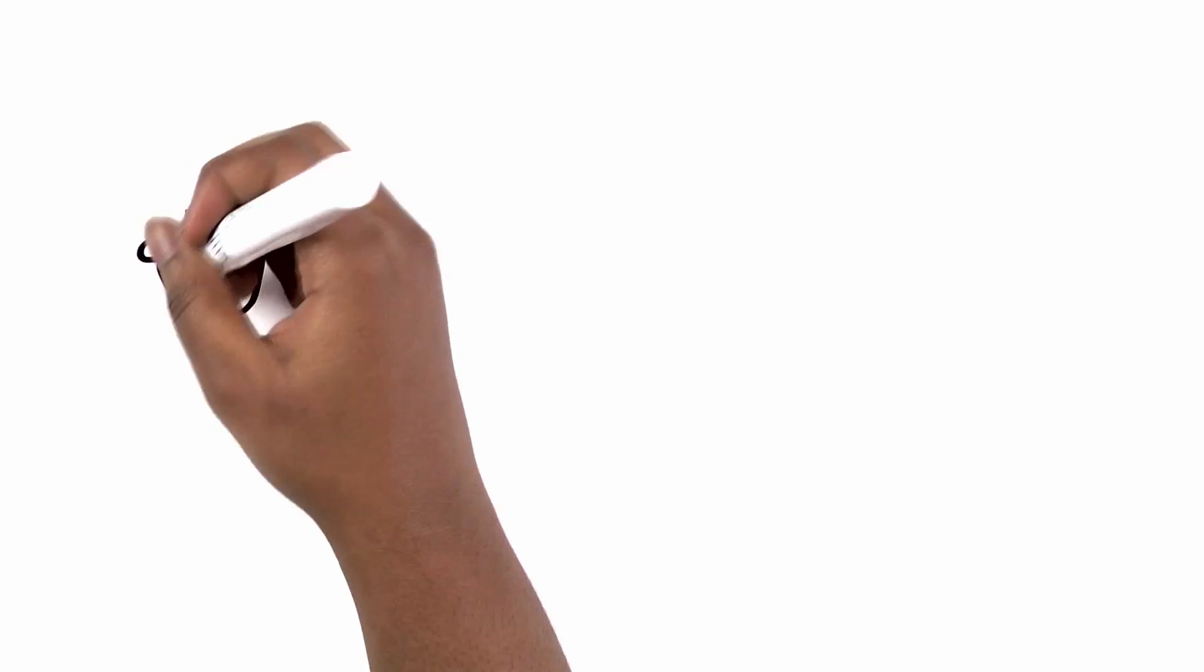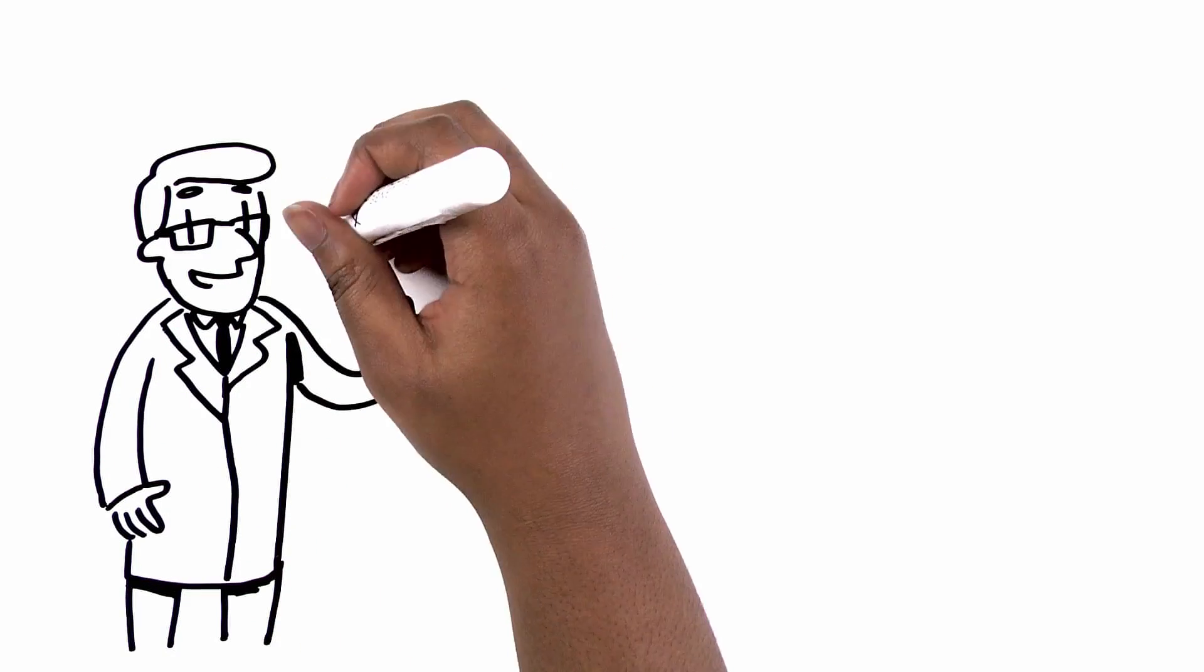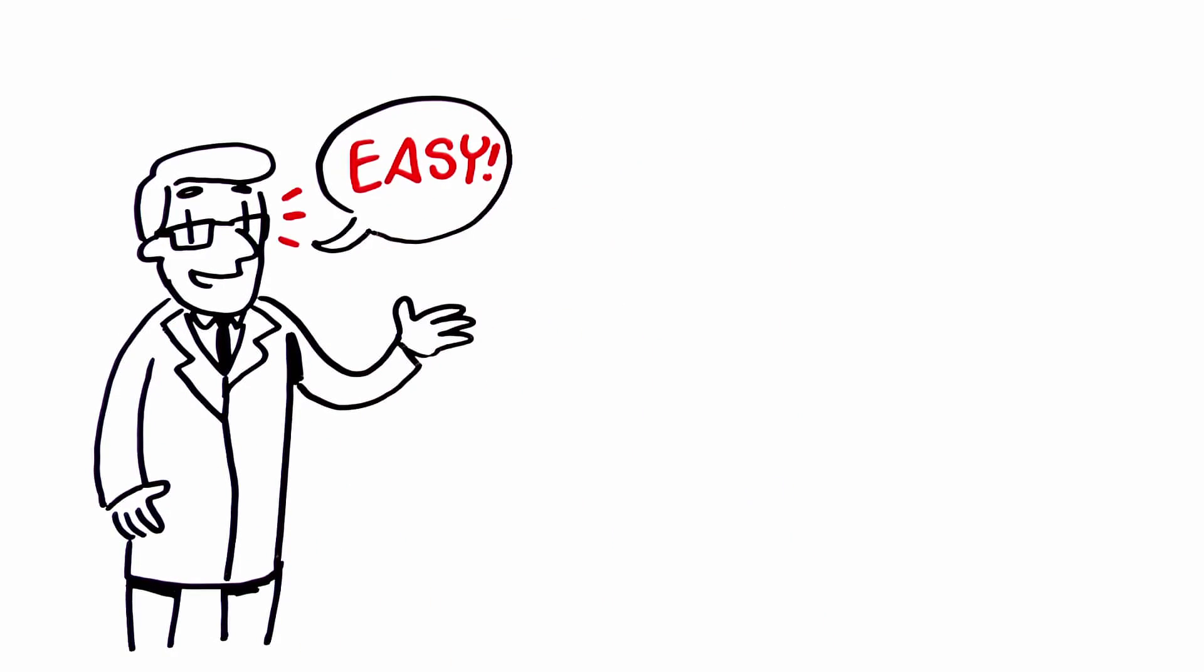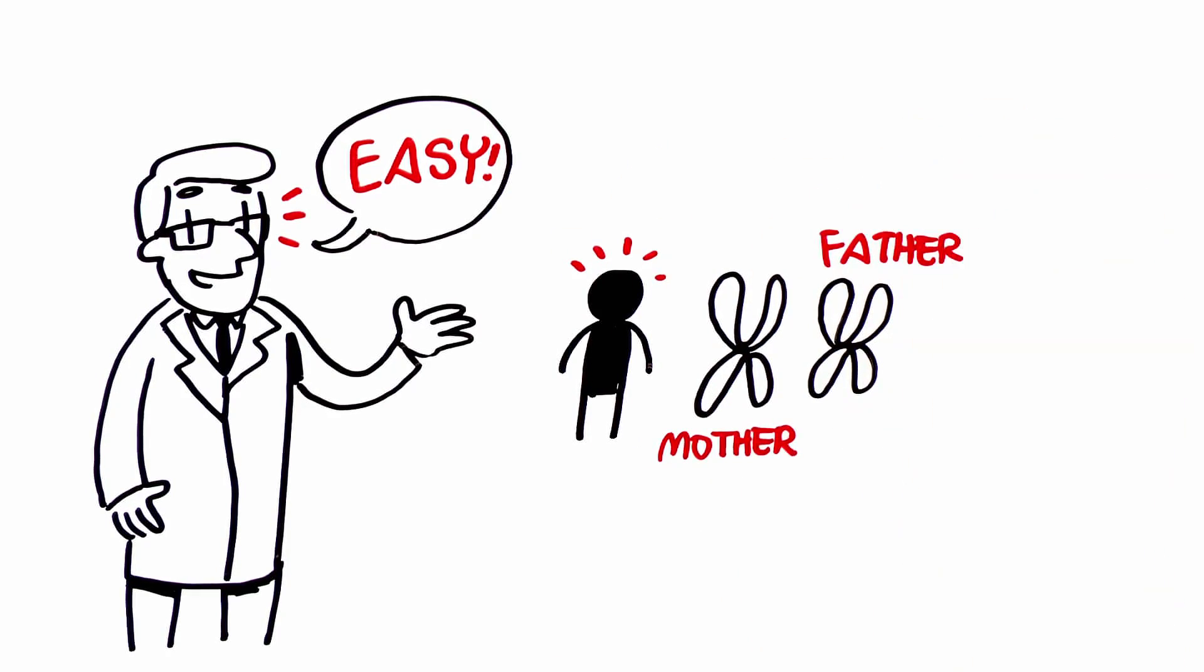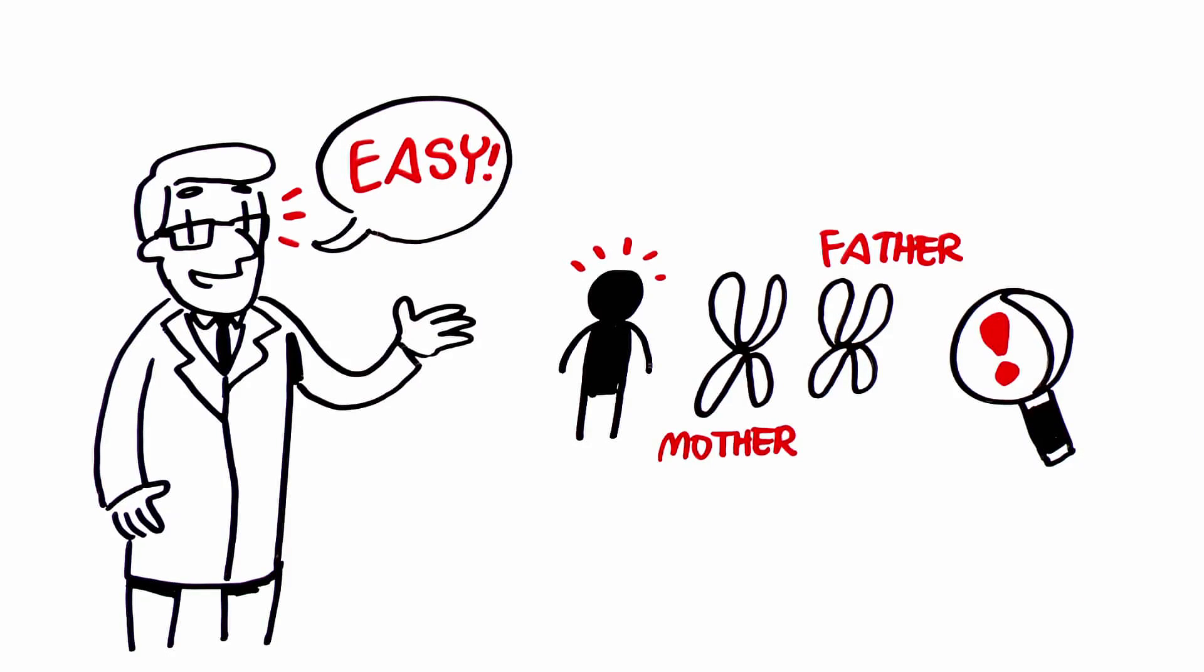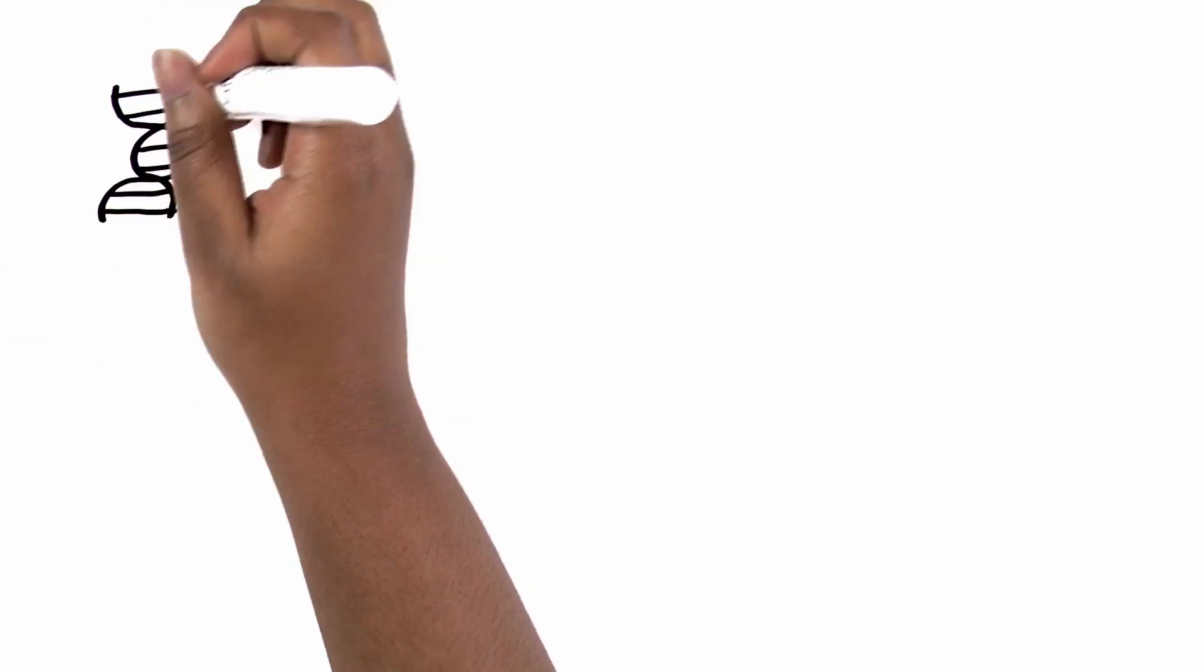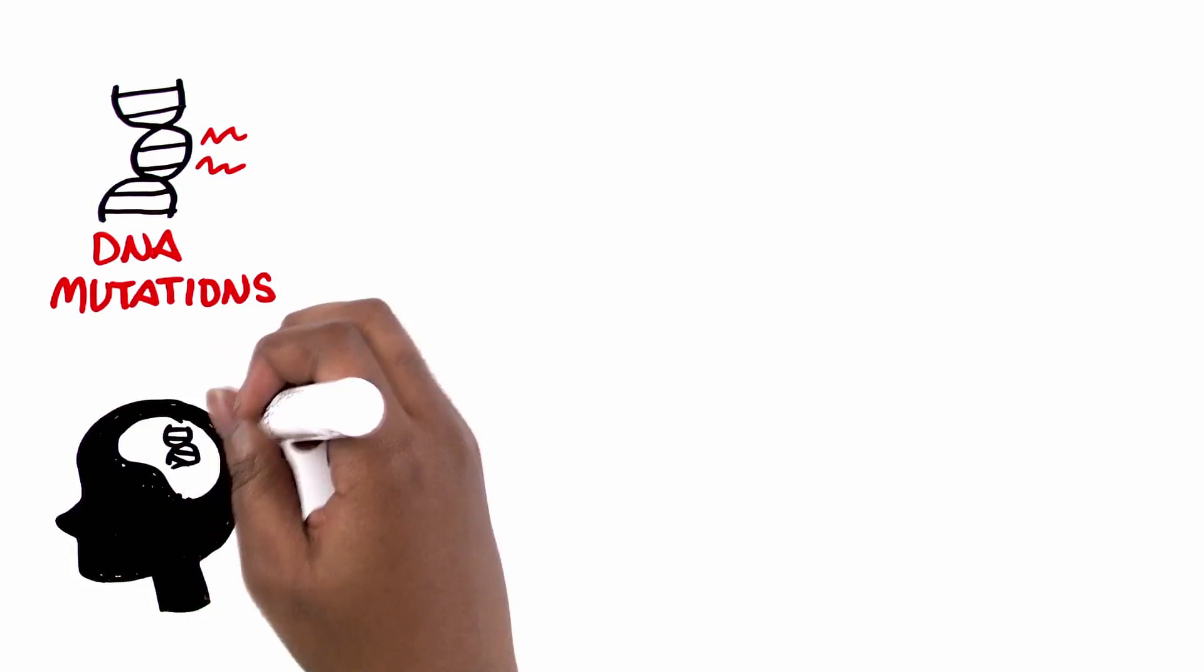Let's take a moment and go over a brief lesson in genetics to make it a little easier to understand PGD testing. Every human being has two unique copies of each chromosome, one inherited from their mother, and one from their father. Sometimes, a small change can occur in one of the many genes on these chromosomes. These are known as DNA mutations and are what causes inherited genetic diseases.